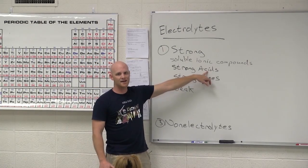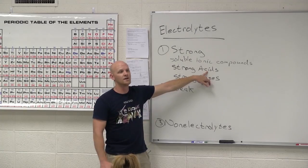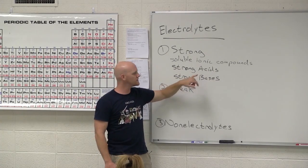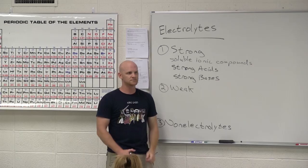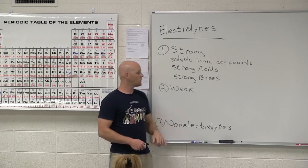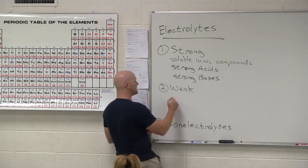So all your strong acids begin with an H, and there are seven specific ones. So what if you see a compound that starts with an H? That's not one of your seven strong acids. What is it? It's a weak acid, it turns out as well. One of your weak electrolytes.